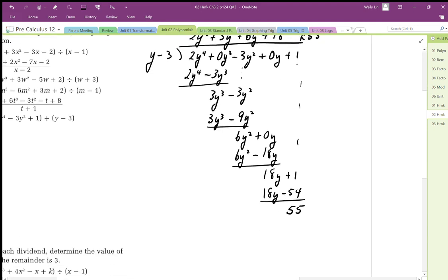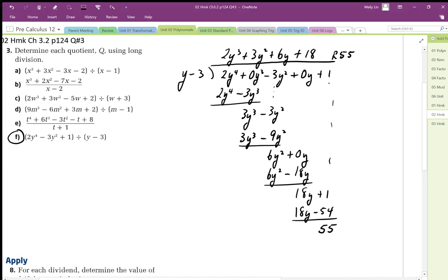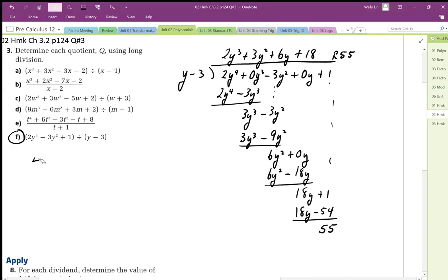Okay, and then as a division statement, it would look like this. 2y to the 4 minus 3y squared plus 1 is equal to the divisor times the quotient. So I'm going to write that as d. This is q.